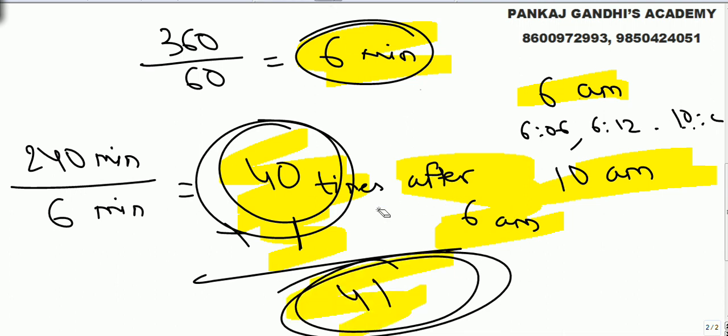Look, 40 times after the initial one. But most of the times in exams you will get answer option 40 also, but right answer is 41. So answer is 41 times because first time it was 6 o'clock.